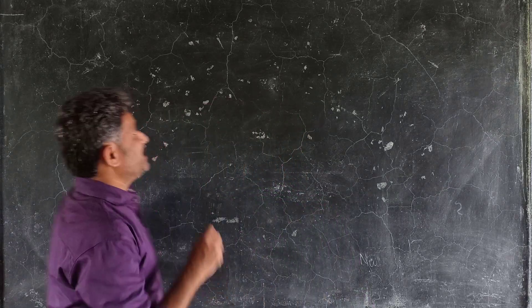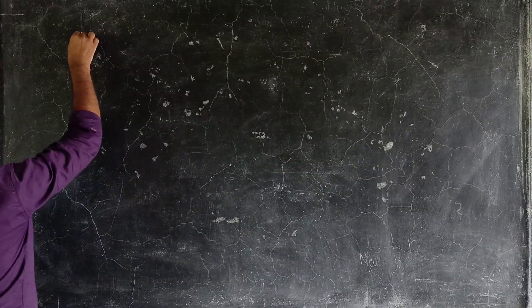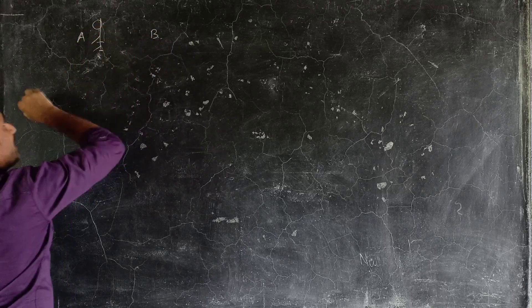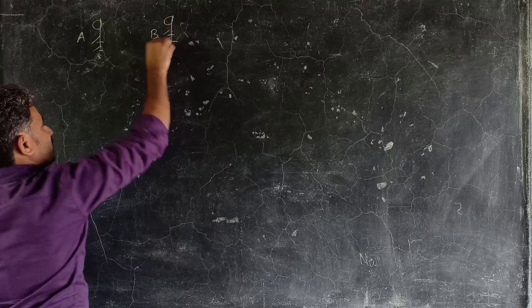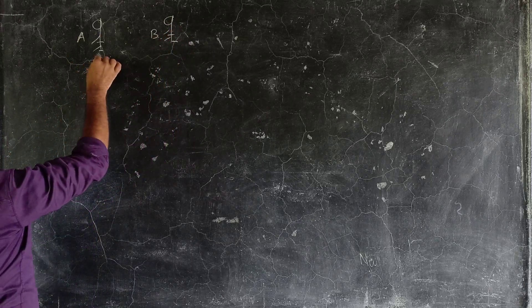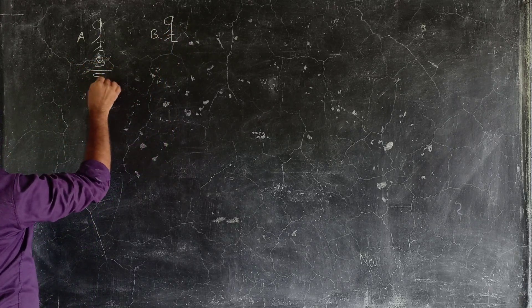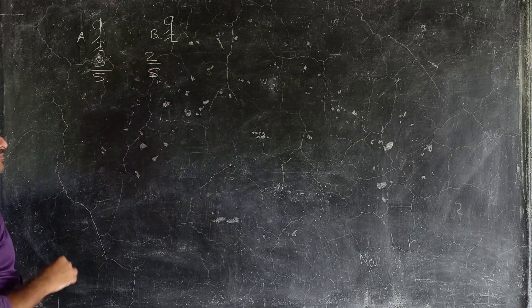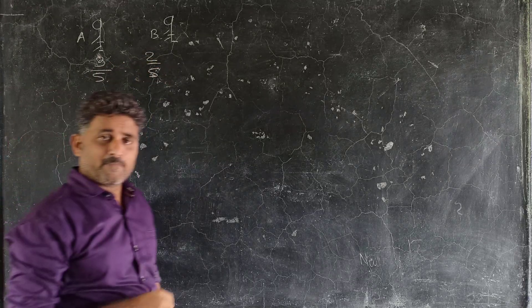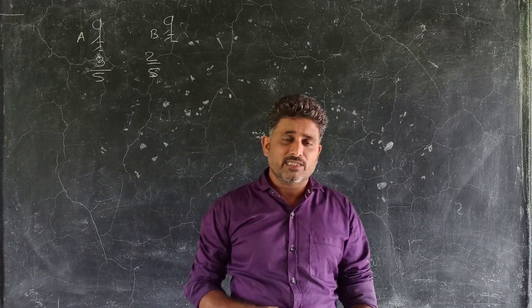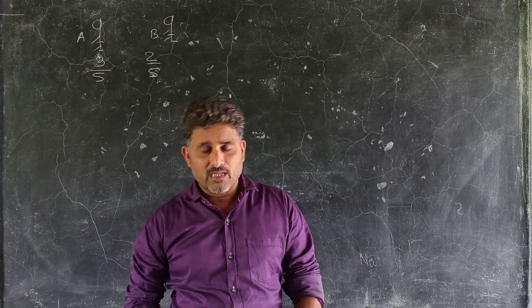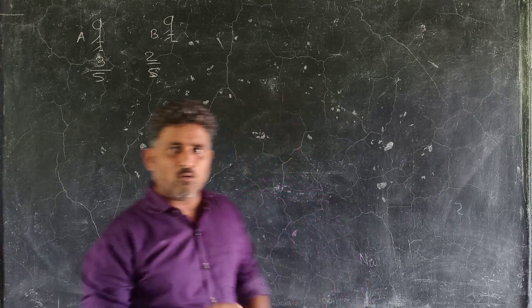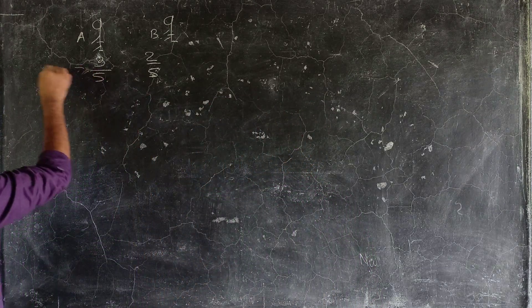First, two partners are A and B. A's profit sharing ratio is 3 upon 5, and B's profit sharing ratio is 2 upon 5. This is the old ratio.